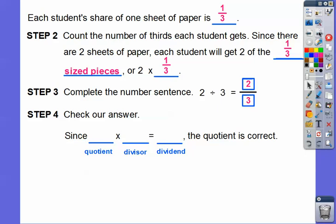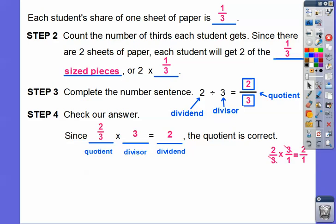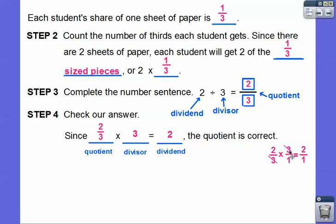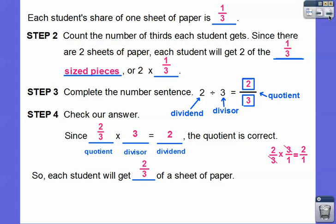Let's check our answer. Since blank times blank equals blank — the quotient is the answer in the division problem, the divisor is the number you're dividing by, and the dividend is the last one. So this two goes here, this divisor goes here, and two-thirds goes here. Two-thirds times three equals two — the threes cancel, leaving two times one over one, which is two. Each student will get two-thirds of a sheet of paper.